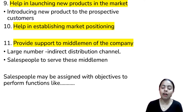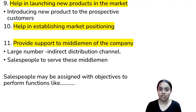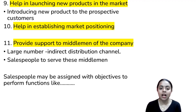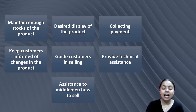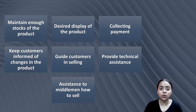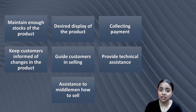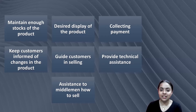The eleventh point is to provide support to the middlemen of the company. Other employees support companies through middlemen. Key middleman support functions include stocking, display, payments, handling the same products, customer assistance, technical assistance, and sales support.